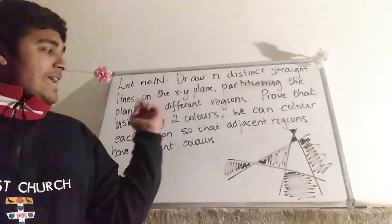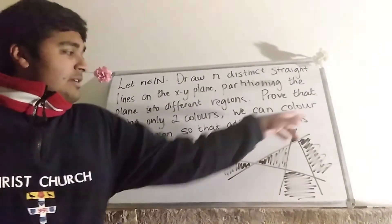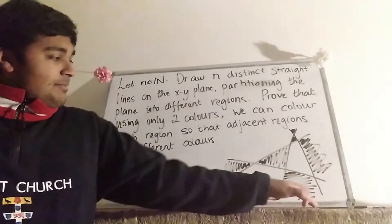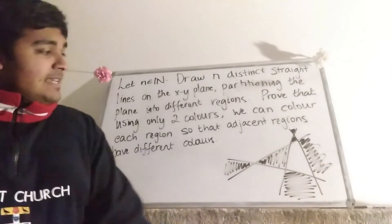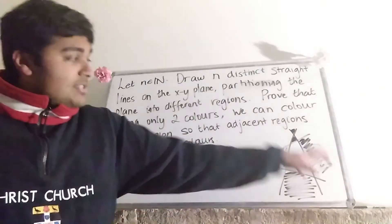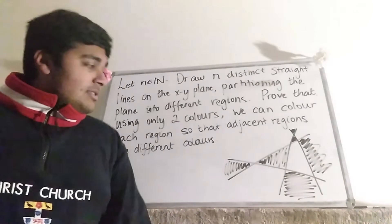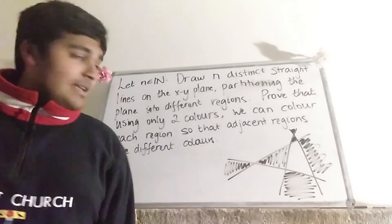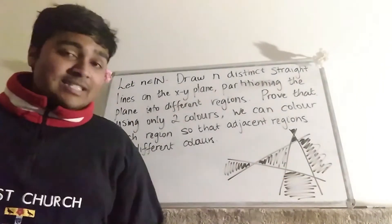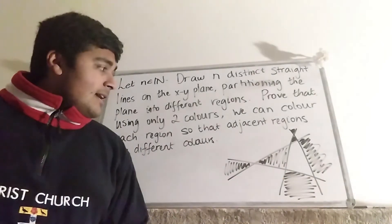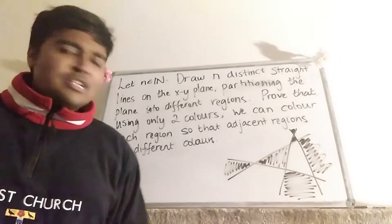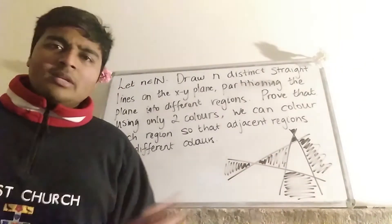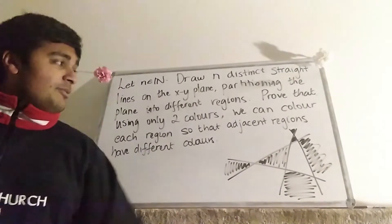I've drawn a little example here. This is the case n equals 4, so we've got four straight lines. You can see the different regions, and these are the regions I've shaded in black, and the remaining regions I've left white, so no two adjacent regions have the same colour. If two regions touch at a diagonal, we don't consider them adjacent, so it's fine if two regions of the same colour only touch at a diagonal.